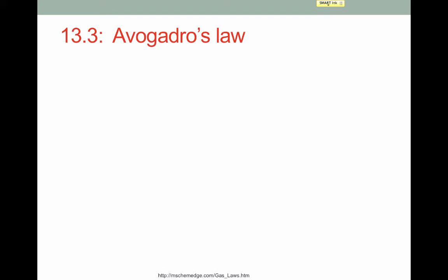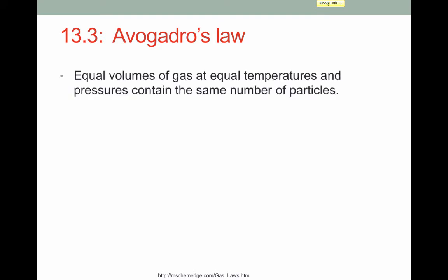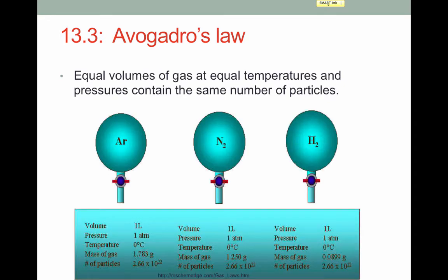An interesting consequence of Avogadro's Law is that equal volumes of gas at equal temperatures and pressures will always contain the same number of particles. If they all are at the same pressure and temperature and they all occupy the same volume, they will all contain the same number of particles. Notice they don't have the same mass, however — this is something you should consider: why don't they have the same mass?